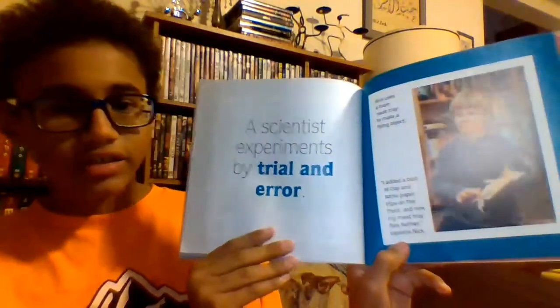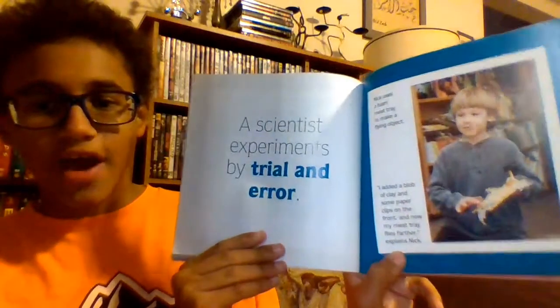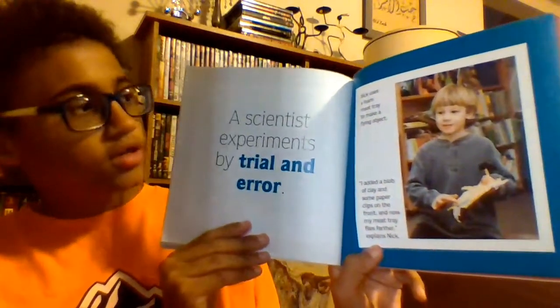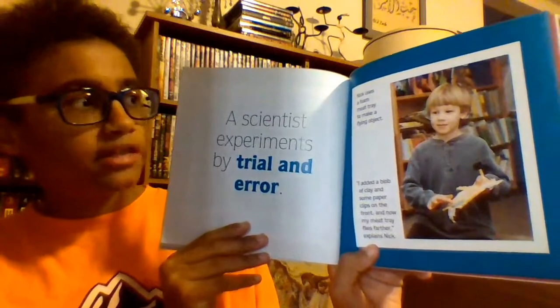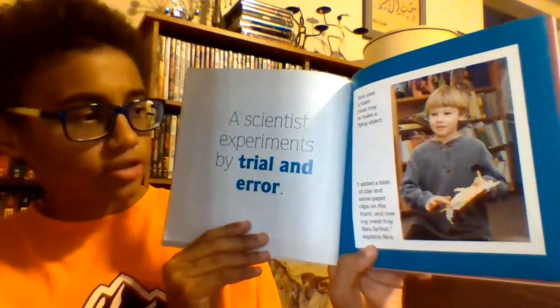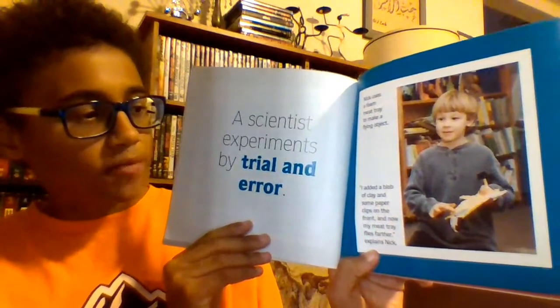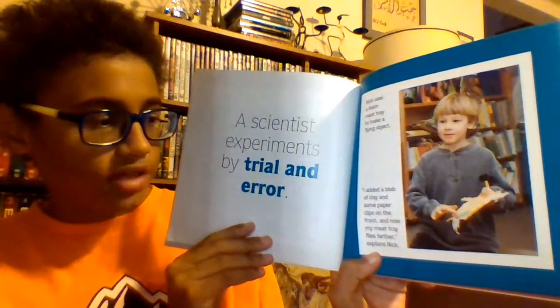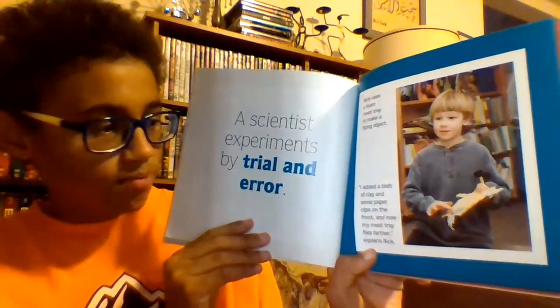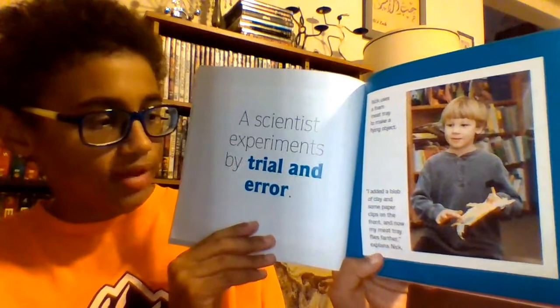A scientist experiments by trial and error. Nick uses a foam meat tray to make a flying object. 'I added a blob of clay and some paper clips on the front. And now my meat tray flies farther,' explains Nick.